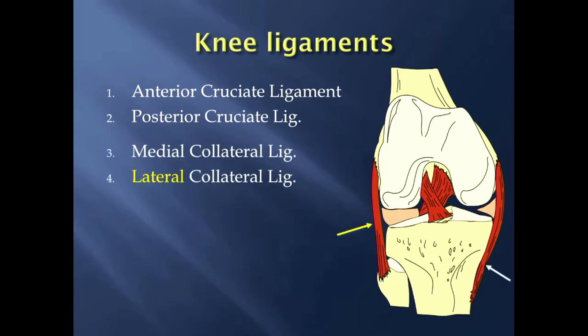The other pair of ligaments are the medial and lateral collateral ligaments, and they're named for the side of the knee that they're on — the medial collateral ligament on the medial side, and the lateral collateral ligament, which attaches to the head of the fibula.